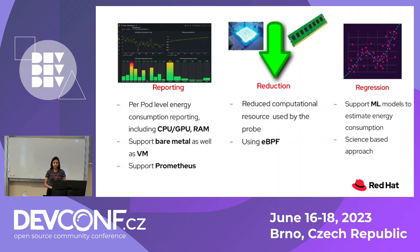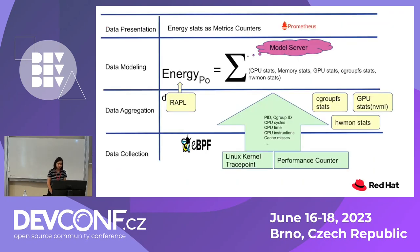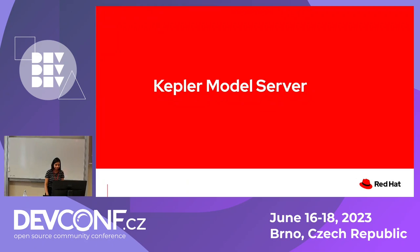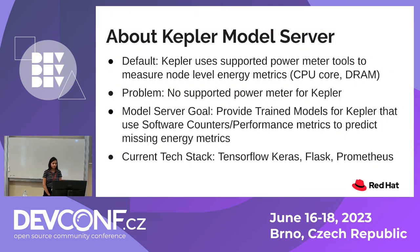Not all the time do you have access to hardware power consumption using RAPL or ACPI. For example, in the case of a VM, you cannot access the power meter. In that case, we use machine learning models to estimate energy — this is the bottom-up approach. For data collection and aggregation, Kepler uses software counters and power meters to calculate power consumption by the hardware. For data modeling and presentation, Kepler converts these power consumption readings into energy estimates using machine learning. These machine learning models are formed by the Kepler model server. When node energy is not provided, or in the absence of a power meter, Kepler relies on pre-trained models that can estimate energy consumption.